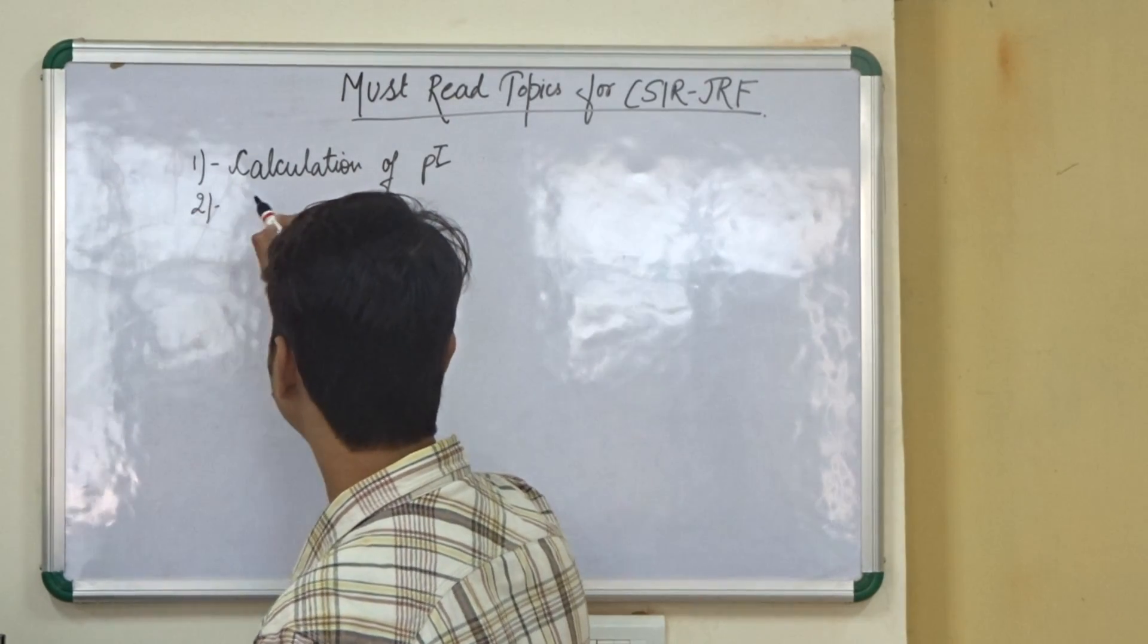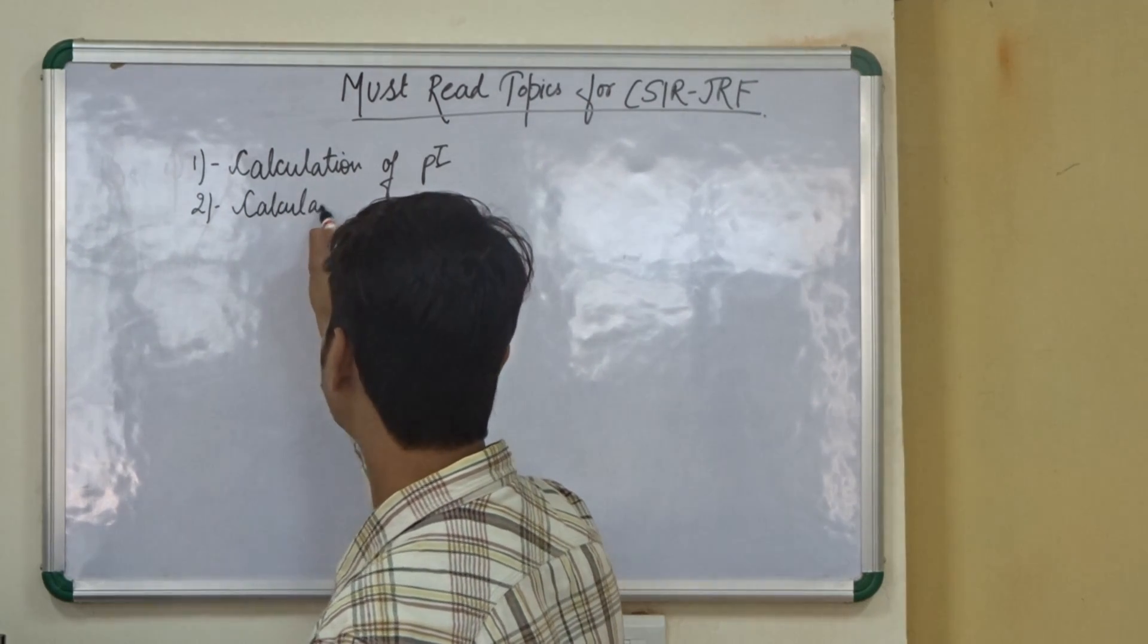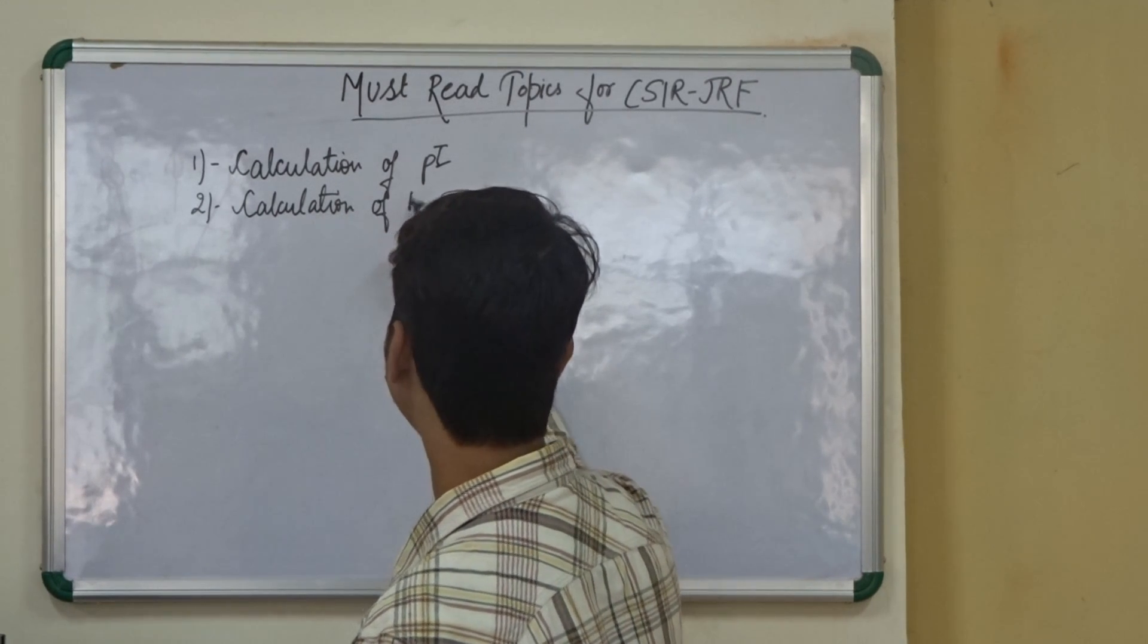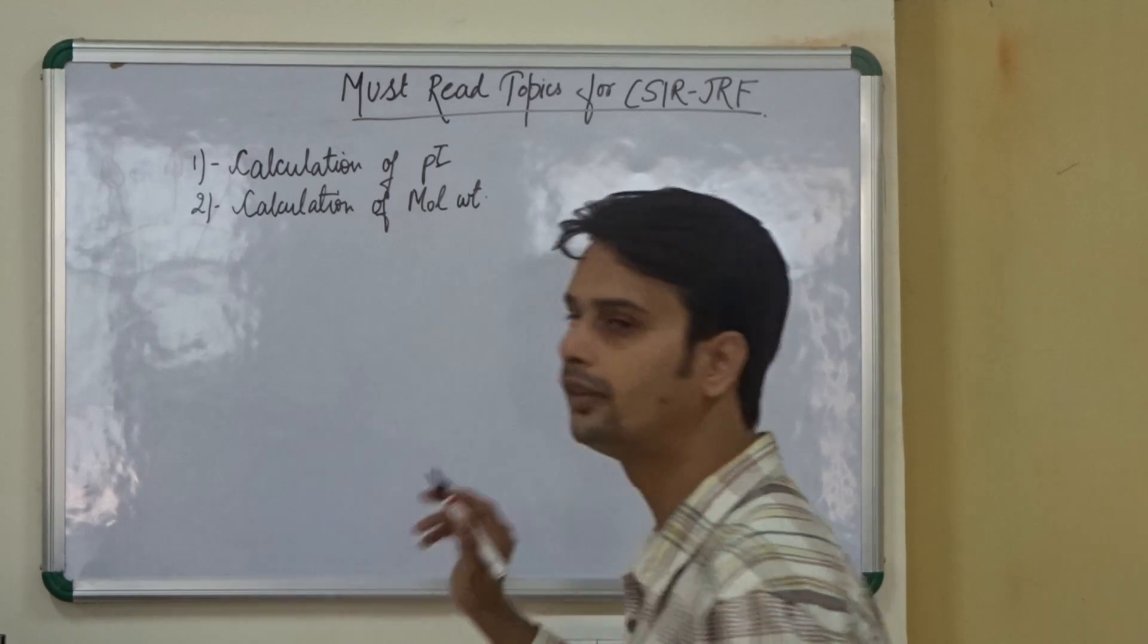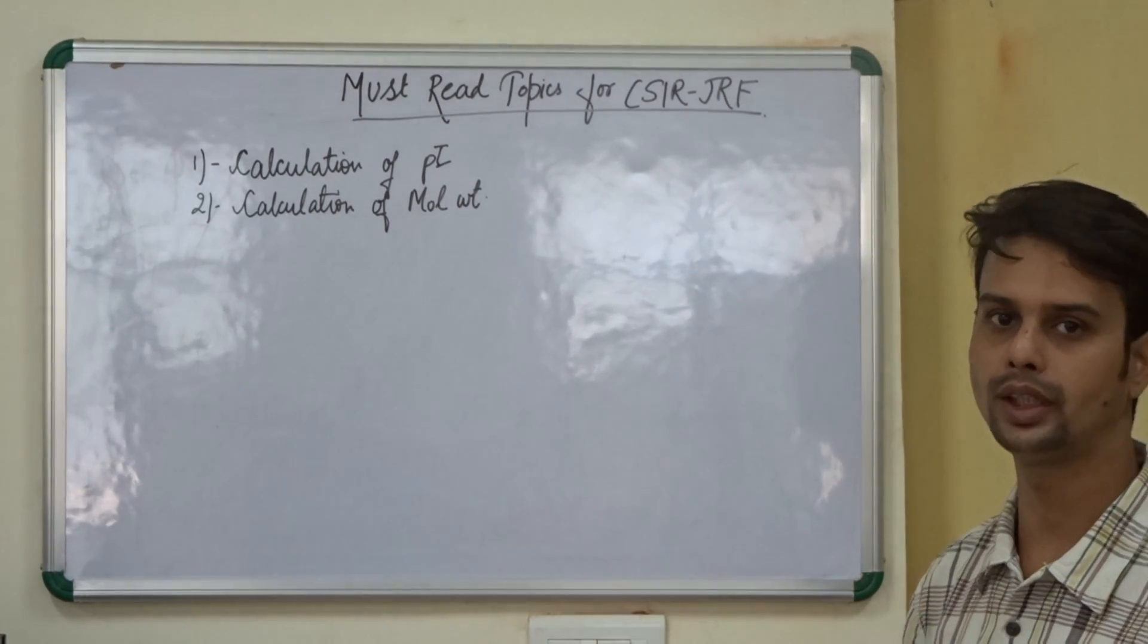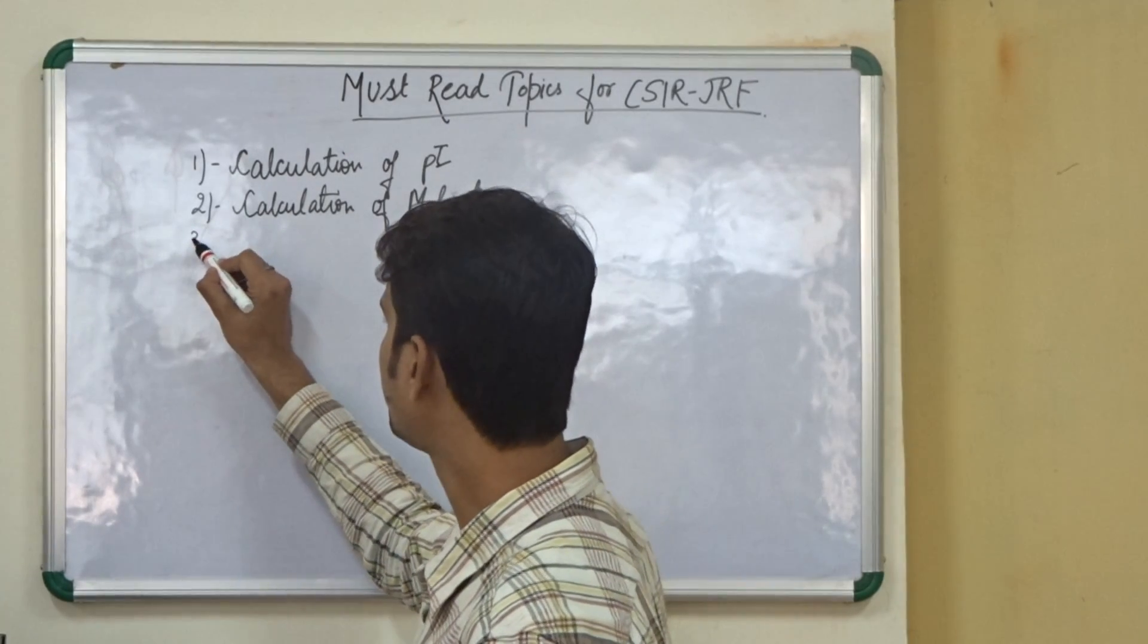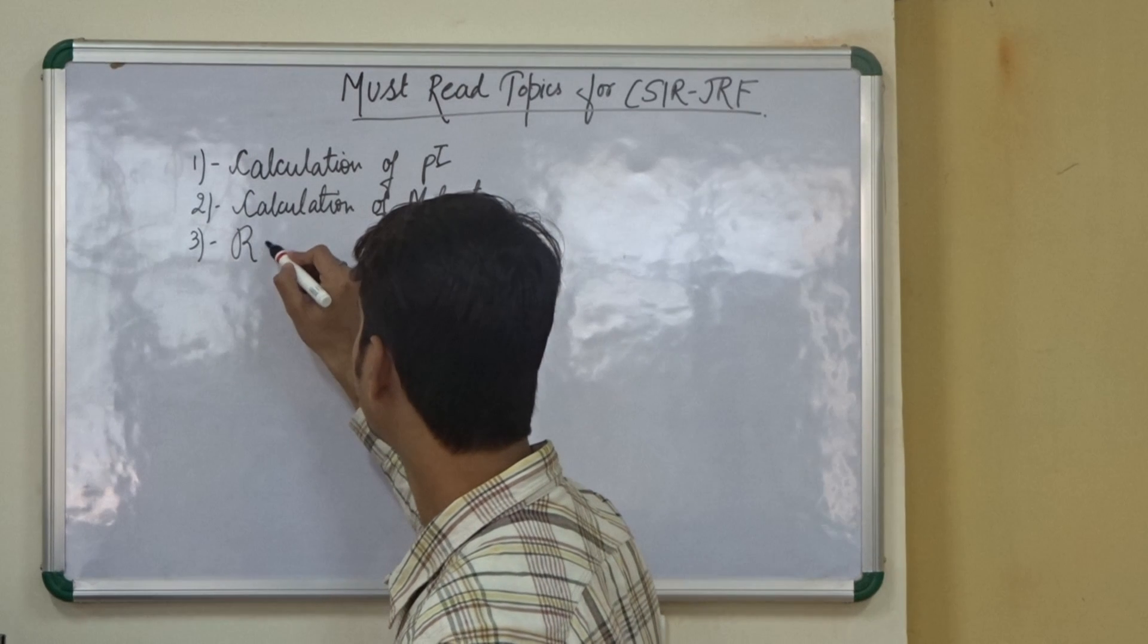The second one is calculation of molecular weight of a given peptide. They give us some peptide and they tell us to calculate the molecular weight. How we can calculate it, we must know about it.